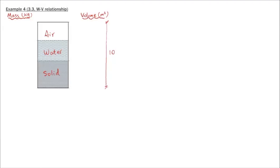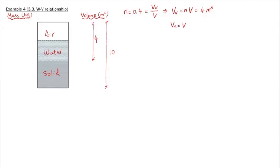The total volume is 10. The first known I'm going to use is porosity. The porosity of the soil is 0.4. By definition, porosity equals volume of voids over total volume, so volume of voids equals n times total V, which is 0.4 times 10, giving 4 cubic meters. This means the volume of solids, Vs, is total volume minus volume of voids: 10 minus 4 equals 6 cubic meters.